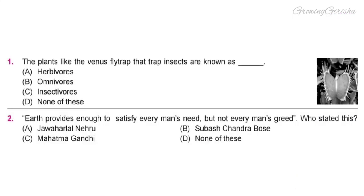Question 1. The plants like the Venus flytrap that trap insects are known as dash. Option C: Insectivorous.